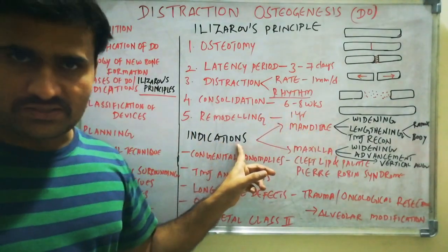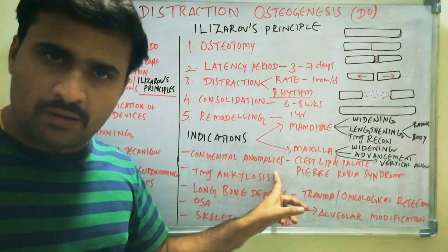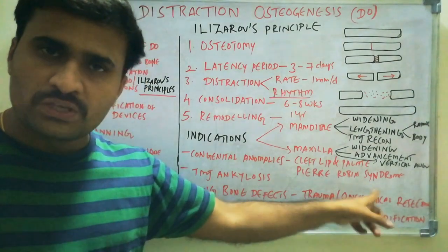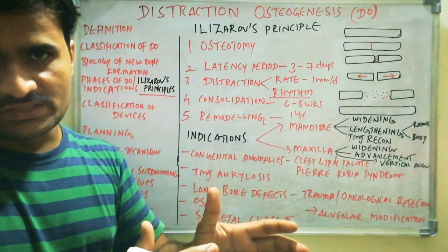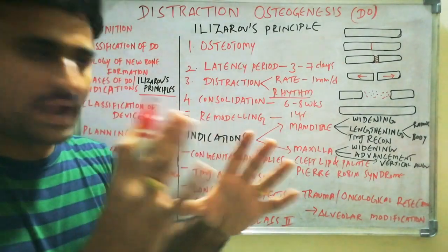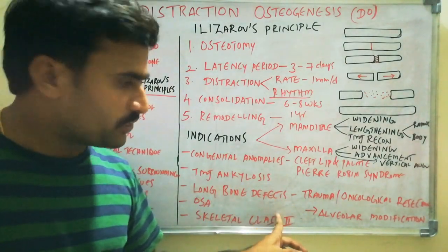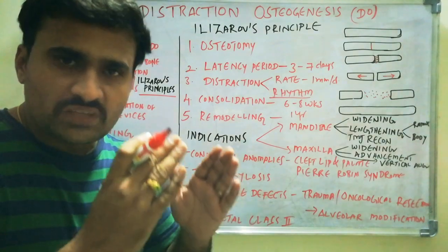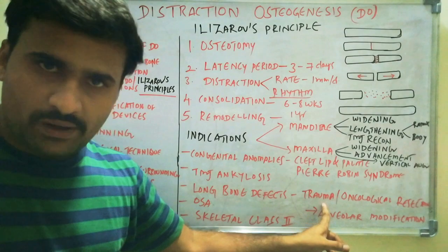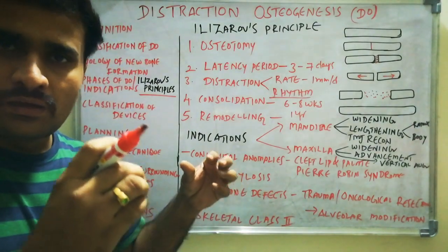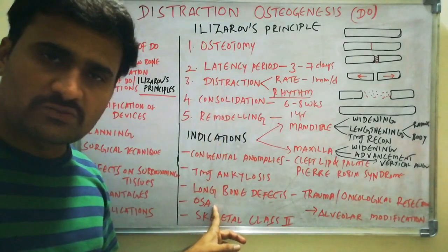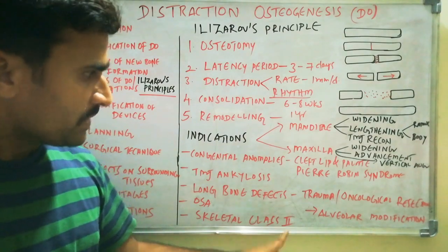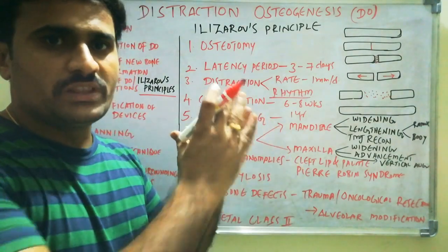Distraction osteogenesis is indicated in cases of congenital anomalies like cleft lip and palate, where maxillary deficiency can be augmented. In Pierre Robin syndrome, lower jaw deficiency resulting in bird face deformity can be corrected by increasing the mandible. TMJ ankylosis, long bone defects from trauma or oncological resections, obstructive sleep apnea syndromes, and skeletal class 2 cases with mandibular deficiency are also indications.